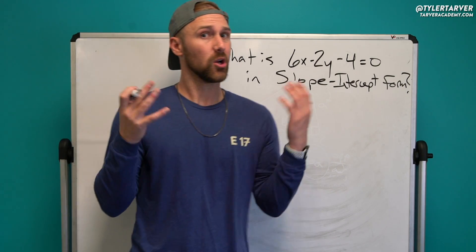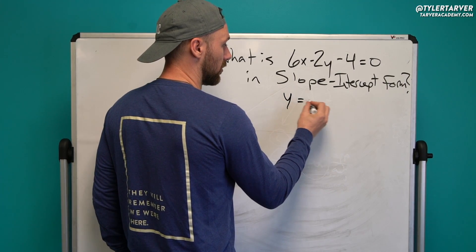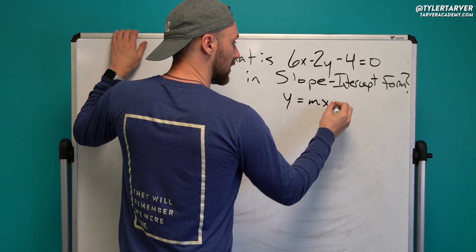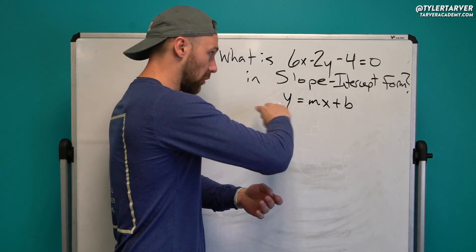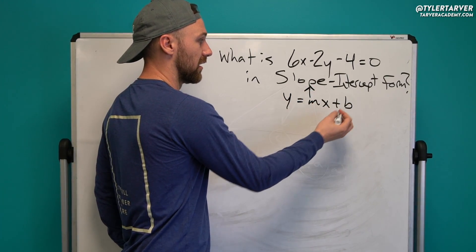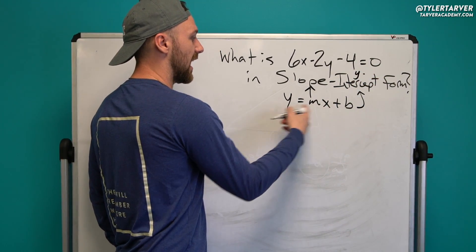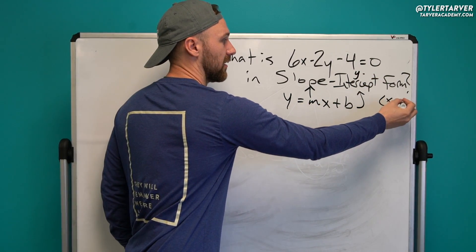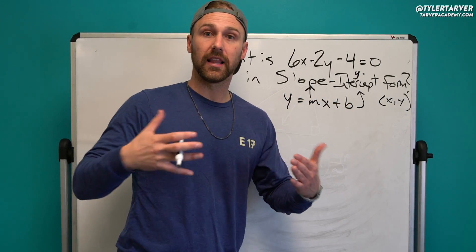So the first thing you need to know is what is slope-intercept form? Slope-intercept is y equals mx plus b. In this form, m is our slope, b is our y-intercept, and x and y are any coordinate that is on this line. This formula represents a line on a graph.